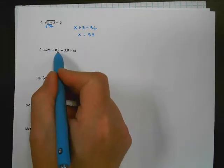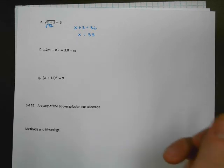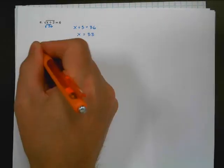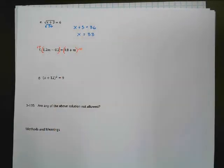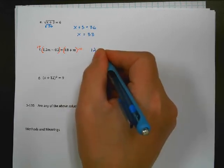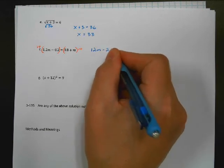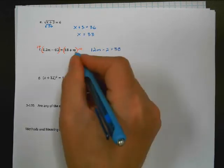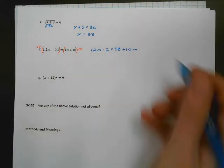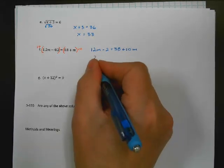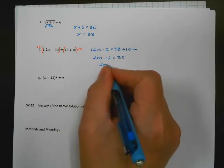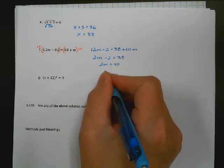Next one: I've got tenths place on all terms, so I'll multiply by 10 to get rid of those decimals. Multiplying both sides by 10: I end up with 12m minus 2 equals 38 plus 10m. Everything gets multiplied. Subtract 10m from both sides and get 2m minus 2 equals 38. Add 2 to both sides and get 2m equals 40, so m equals 20.